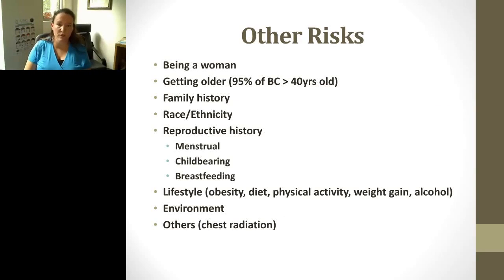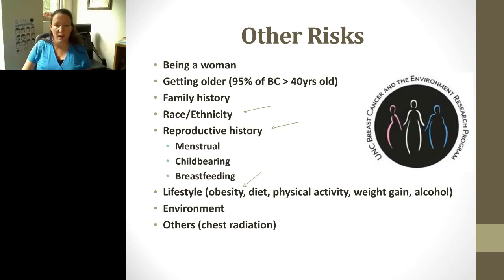There are many other risk factors: being a woman, getting older, race and ethnicity, reproductive history, lifestyle, environment, and known risk factors like radiation. Today, as part of our Breast Cancer and the Environment Research Program — the B-SERP — at UNC, we're going to focus on race and ethnicity, reproductive history, and obesity.